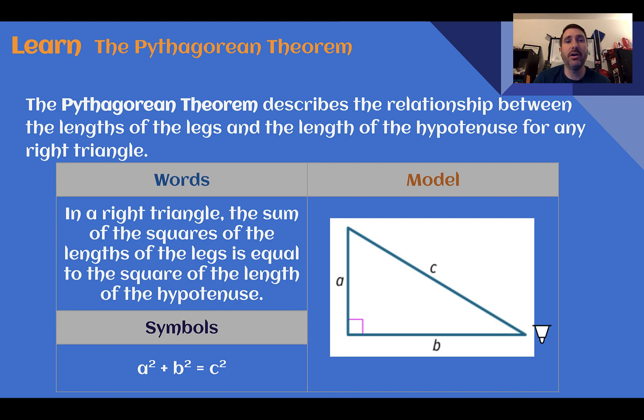Let's learn. The Pythagorean Theorem. The Pythagorean Theorem describes the relationship between the length of the legs and the length of the hypotenuse for any right triangle. How it works, in a right triangle, so the key here is it has to be a right triangle, having that right angle. The sum of the squares of the lengths of the legs is equal to the square of the length of the hypotenuse.